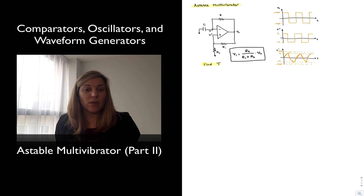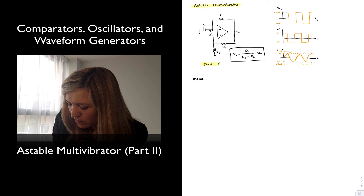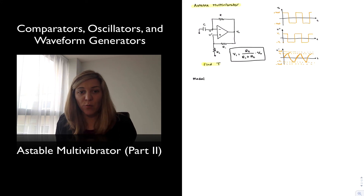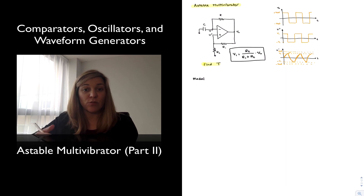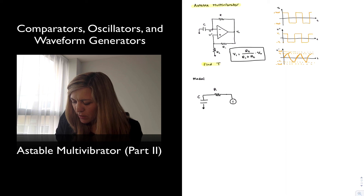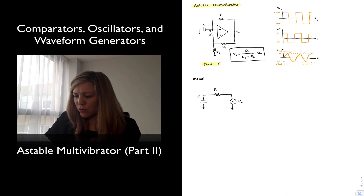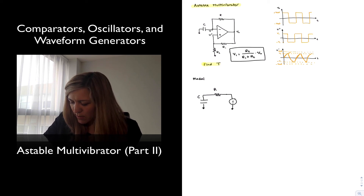Now we're interested in calculating the period of oscillation for our output signal. To do that we are going to redraw the circuit and create a model where the output voltage is what causes the capacitor to charge or discharge. Capacitor C is being charged and discharged via resistor R through the output voltage, which we represent as a voltage source V_out. Initially V_out is sitting at the saturation voltage, V_out = V_sat.